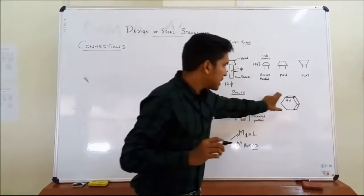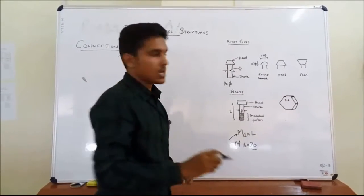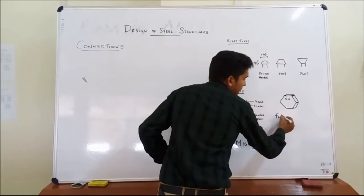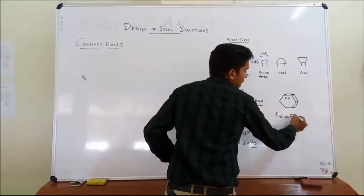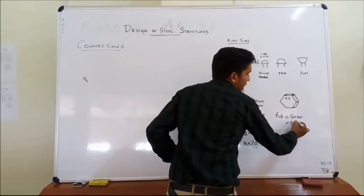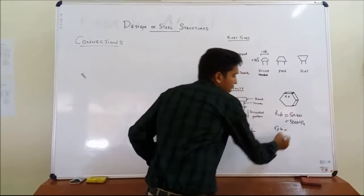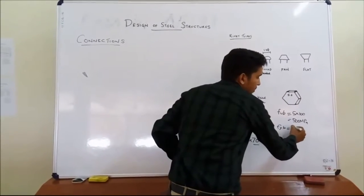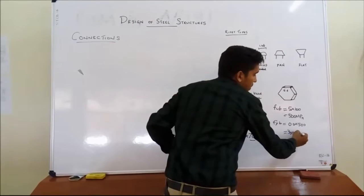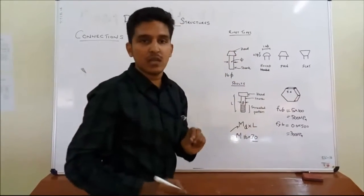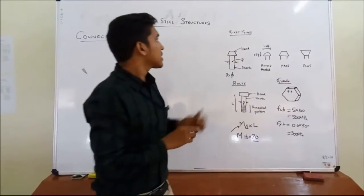When you see a bolt, you see a representation like this. This represents the grade of a bolt. 5.6 represents the grade of the bolt, where the ultimate tensile stress represented by F_UB, from this 5.6, we know this is 5 into 100 is equal to 500 MPa. Similarly, the yield stress represented by F_YB, which is given as 0.6 into 500 is equal to 300 MPa. This is what this 5.6 grade of bolt represents.